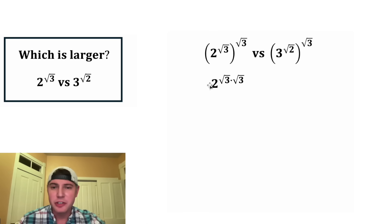On the left-hand side, it's gonna be two to the power of square root of three times square root of three. And on the right-hand side, it's gonna be three to the power of square root of two times square root of three. So this left-hand side is square root of three times square root of three is three. So this is gonna be two cubed.